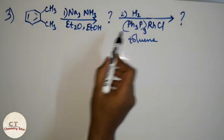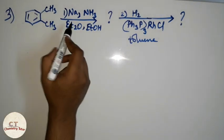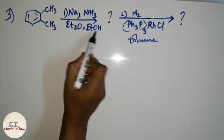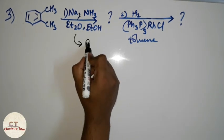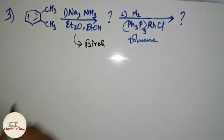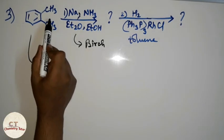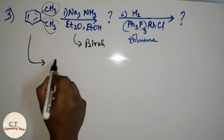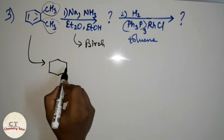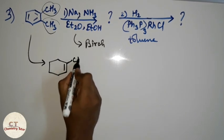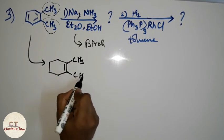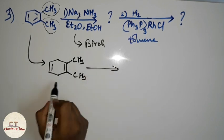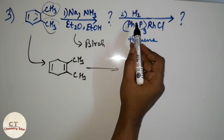Let us see the next question. What products are formed? First, sodium in presence of ammonia, ether, and ethanol — this is Birch reduction, same as before. These two groups are electron-donating, so the double bond will be attached to the electron-donating groups. There will be another double bond as well. This will be the product formed in this reaction.